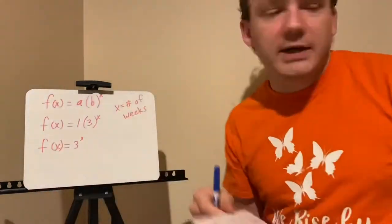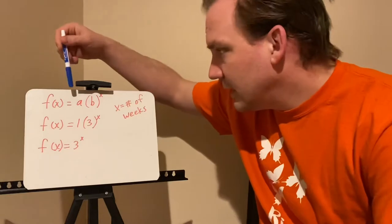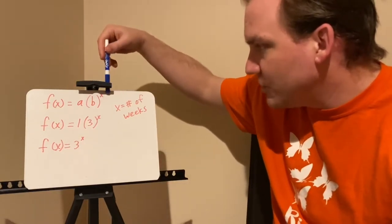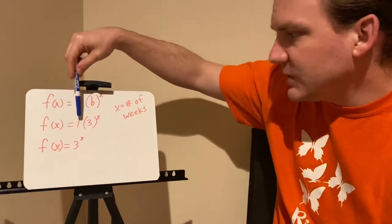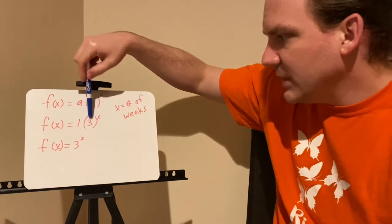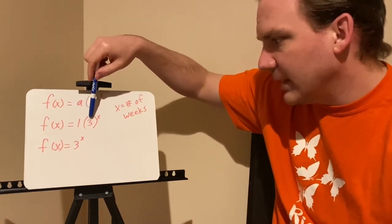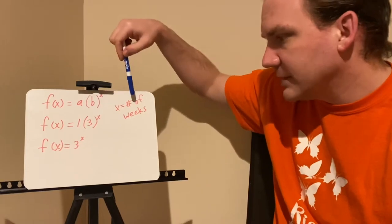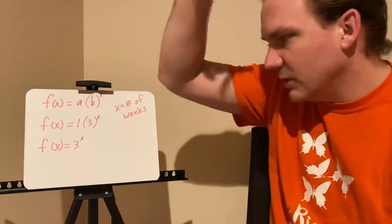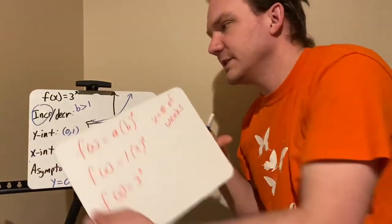We write this as an exponential function: f(x) = a times b to the x. Here, 1 is the initial number of people infected, 3 is the number each person contacts — the multiplication factor — and x is the number of weeks. So f(x) = 3 to the x. That's the exponential function for this case.